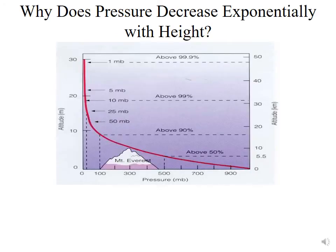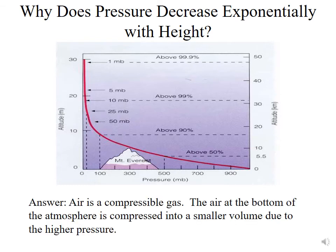So why does this pressure decrease exponentially with height? If you go down scuba diving into the ocean, the pressure increases linearly with depth. So for every 32 feet that you go down into the ocean, it increases by one atmosphere. But the atmosphere above that, the gaseous atmosphere, doesn't behave that way. And the answer is that air is a compressible gas. The air at the bottom of the atmosphere is compressed into a smaller volume due to the higher pressure and the weight of the atmosphere that's above it, squeezing those molecules closer together.